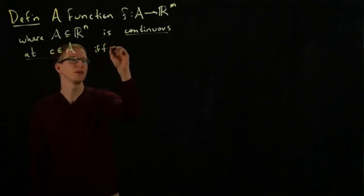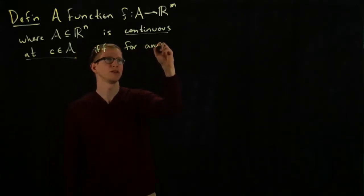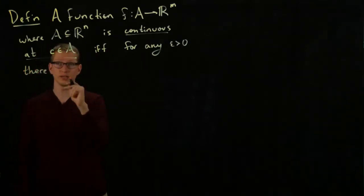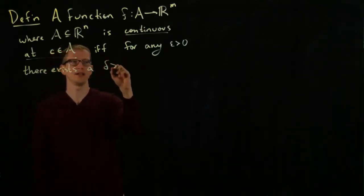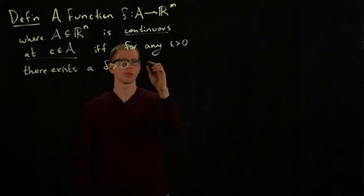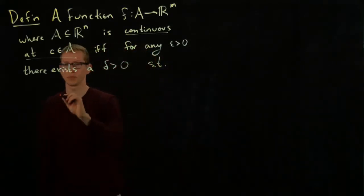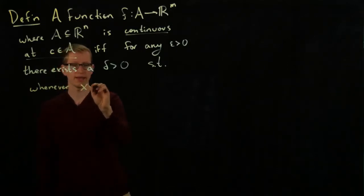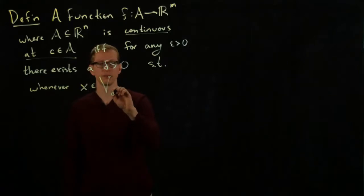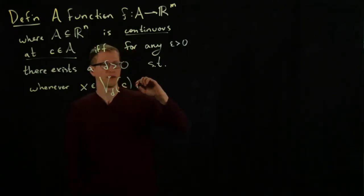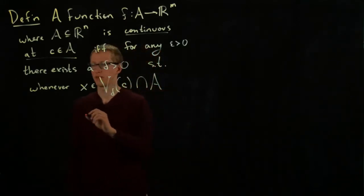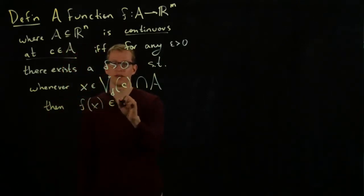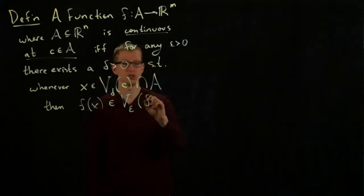if and only if for any epsilon greater than 0, this is the epsilon delta challenge, there exists a delta to that epsilon challenge satisfying the following condition: whenever I choose a point X in a delta neighborhood of the point C and I also make sure that I choose an element of A,